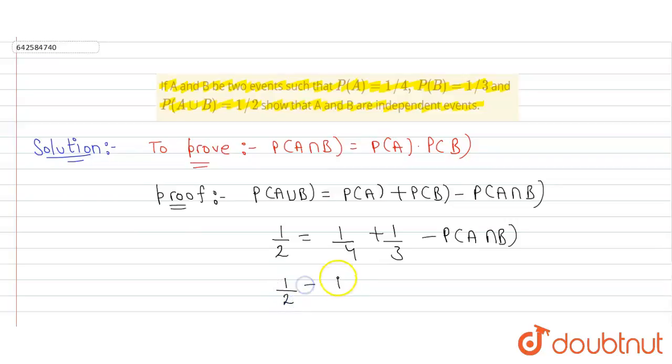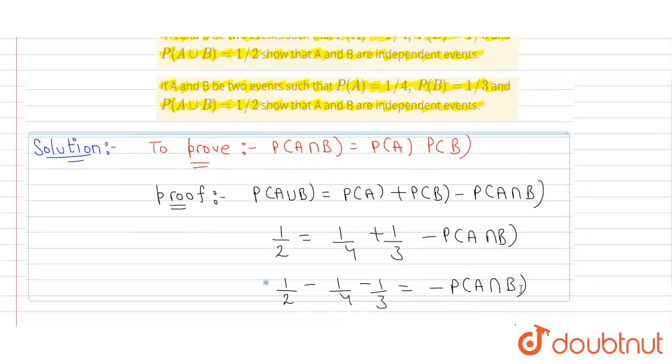Now, 1/2 minus 1/4 minus 1/3 is equal to minus P(A∩B). So now let us take LCM.